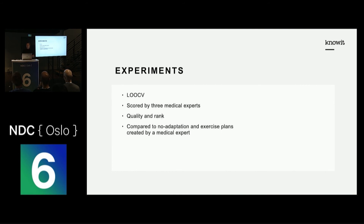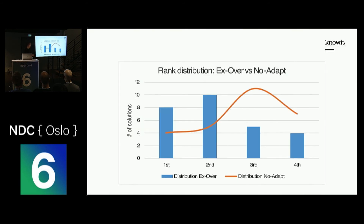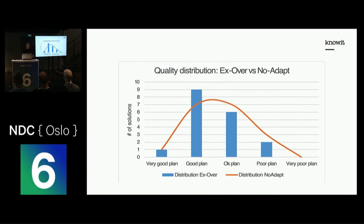Here are some of my results. The orange line represents no adaptation, and the blue columns represent the genetic algorithm I've described. The one with adaptation is ranked as the first or second best plan much more often than simply reusing a solution. When looking at quality, however, the difference isn't that large — it's a bit better with adaptation, but not a huge difference.